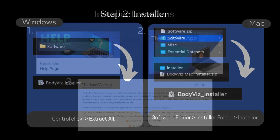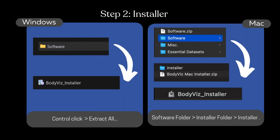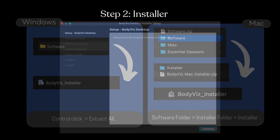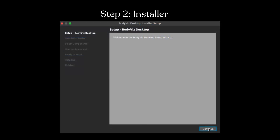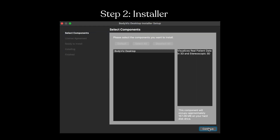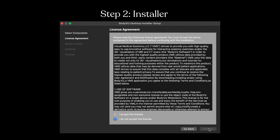Download the installer to your computer, then double-click the BodyViz installer within the software folder. Follow the installation prompts, accept the license, and complete the installation.